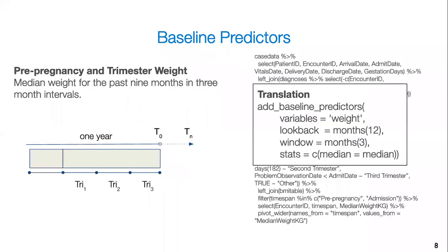The next few slides we'll go over, we'll talk about the underlying predictor level functions that we'll use. So to start with, we have baseline predictors. This is a predictor type that we'll go over. On the background on the right, you can actually see that that was the code that was previously used in order to calculate pre-pregnancy and trimester weight. So we're looking at median weight for the past nine months and three month intervals. And then in the box on the right, you can actually see how we simplified that process using our new package that has this additional functionality.